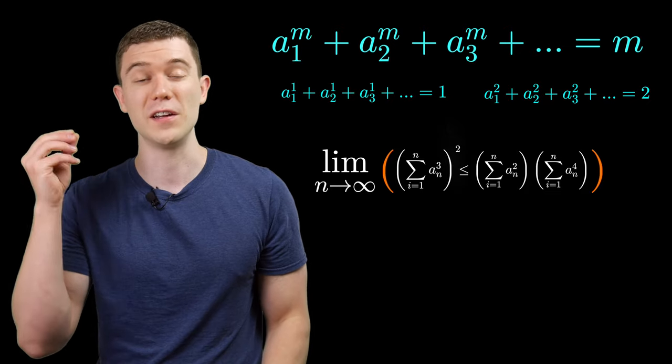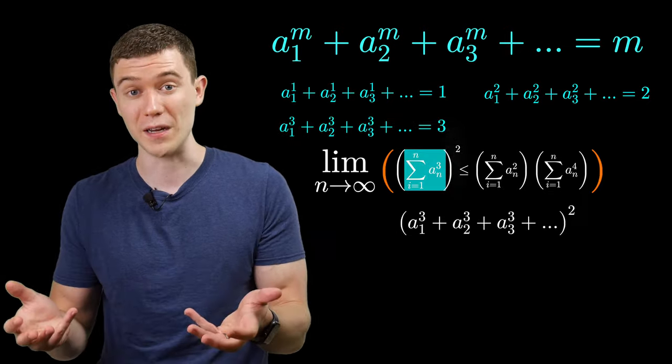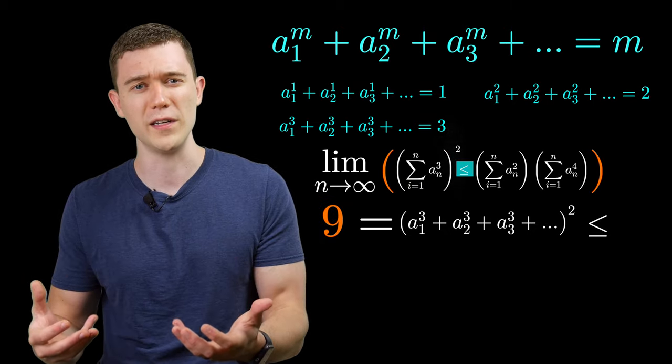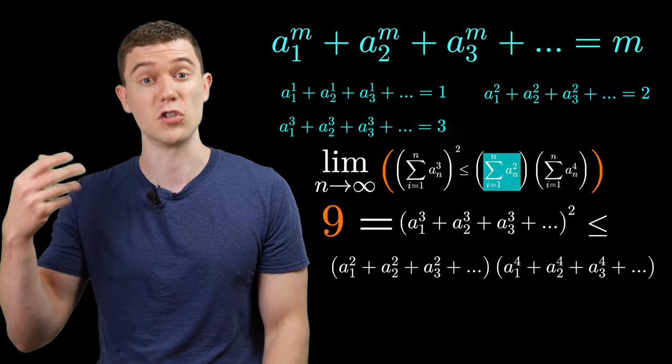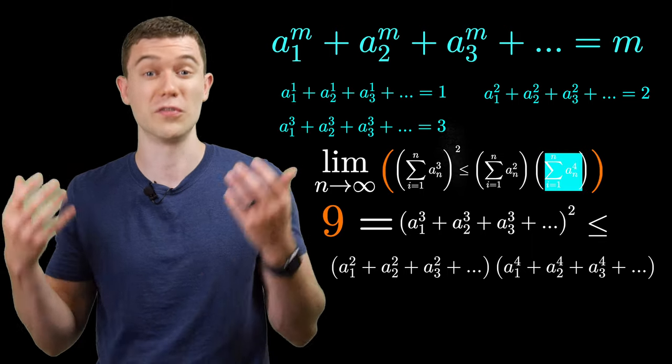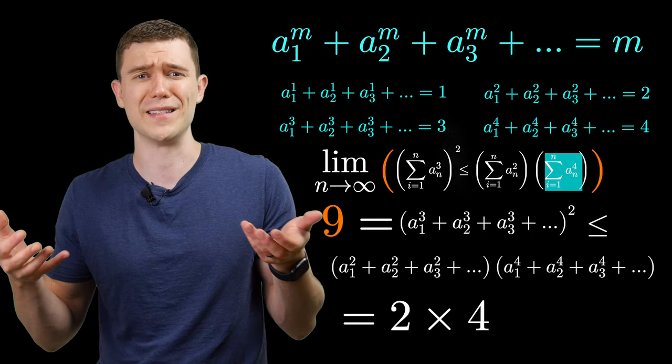The sum of a sub n cubed, well, that would be three. Squared is nine. That has to be less than or equal to, according to our inequality, the sum of a sub n squared, which is two, times the sum of a sub n to the fourth, which is four. And two times four is eight.